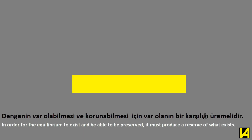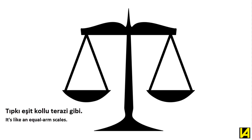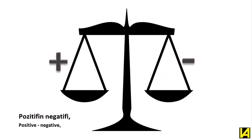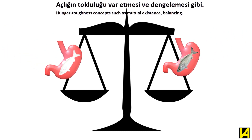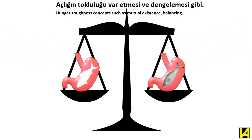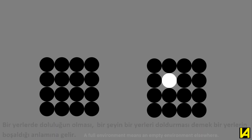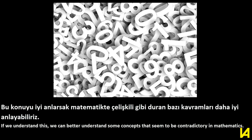Something has to diminish as something increases, or vice versa — it is the zero balance point. In order for equilibrium to exist and be preserved, it must produce a reserve of what exists. It's like an equal-arm scale. Concepts such as matter and antimatter, positive and negative, death and life, hunger and fullness — these mutually exist as balancing opposites.